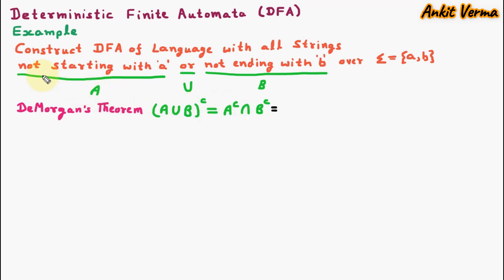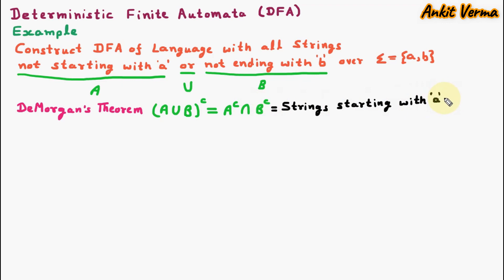Here A is 'not starting with A', so its complement, A complement, will be 'starting with A'. Afterward, union represents OR and intersection is the reverse, representing AND. B complement: since B represents 'not ending with B', its complement will be 'ending with B'. So here we have strings starting with A AND ending with B.